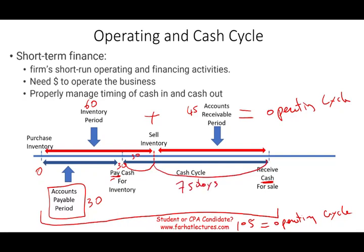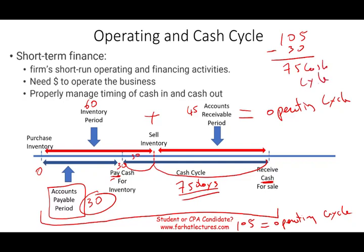One way to compute the cash cycle: take the operating cycle (105) and deduct from it the accounts payable period (30 days), and you get the cash cycle of 75 days. So the formula is: cash cycle = operating cycle minus the AP period.